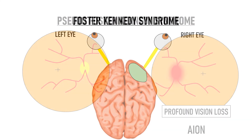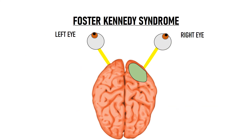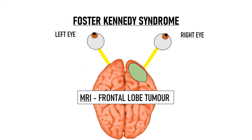Lastly, on MRI, you will find a frontal lobe tumor in Foster Kennedy syndrome, while a mass lesion would be absent in pseudo Foster Kennedy syndrome.